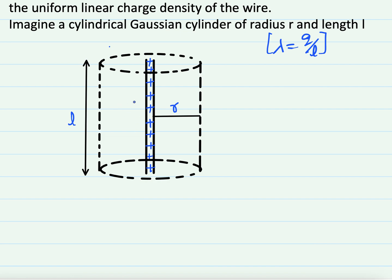Due to the positive charge, the direction of the electric field is radially outwards. The Gaussian cylinder has three surfaces: two flat circular surfaces — top and bottom — and one curved surface in between. If we consider a small area element on the curved surface, its direction is always radially outwards, which is the same direction as the electric field.